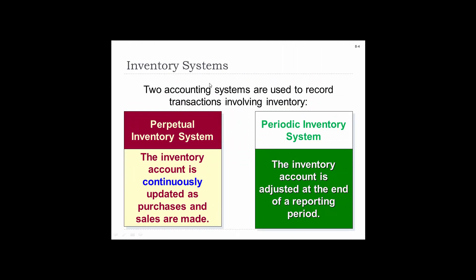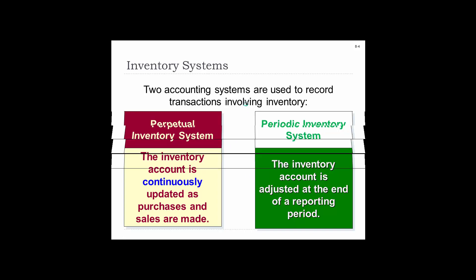There are two types of accounting systems used to record transactions involving inventory. A perpetual inventory system, where the inventory account is continuously updated as purchases and sales are made. Or periodic, which happens once in a while — the inventory is accounted and adjusted for at the end of the reporting period.